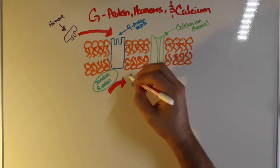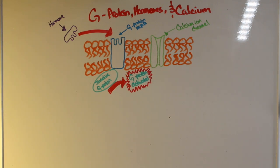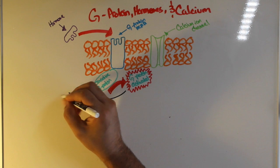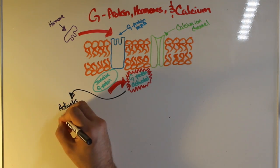Now once the G protein is activated, the G protein will cause the activation of PLC. PLC is phospholipase C.